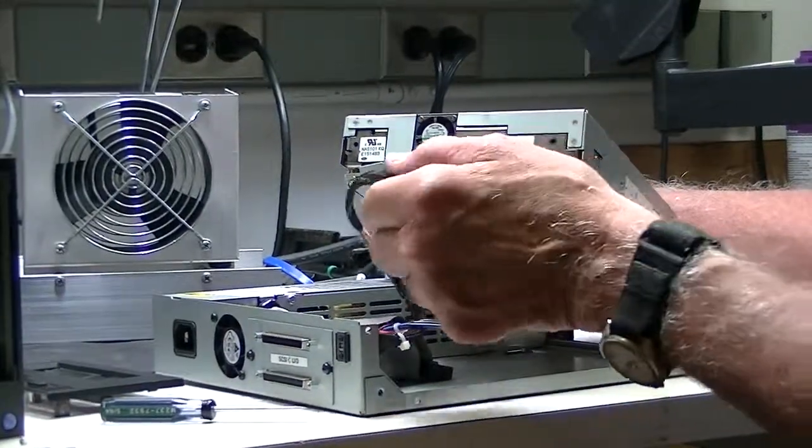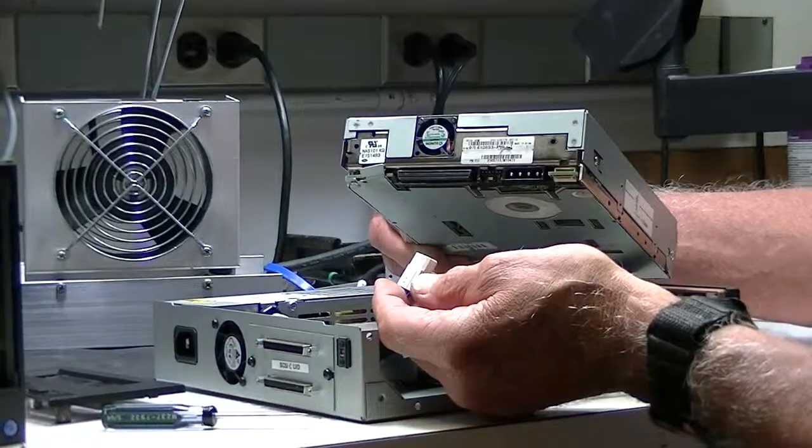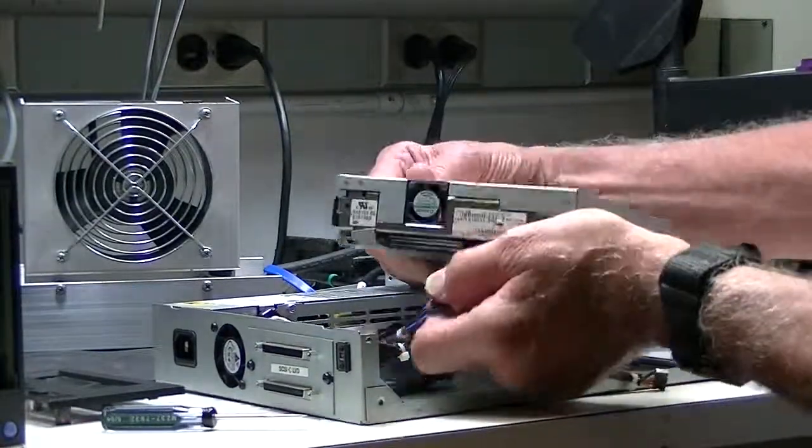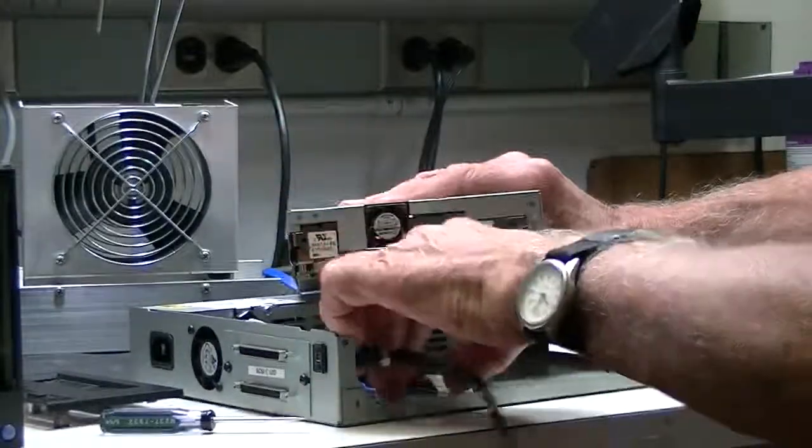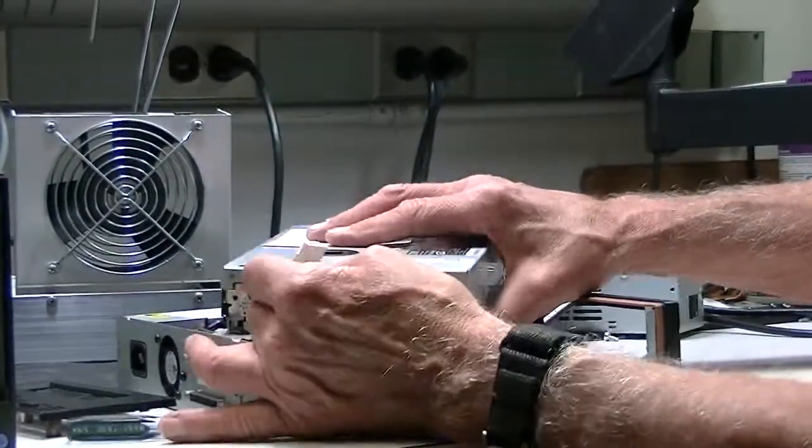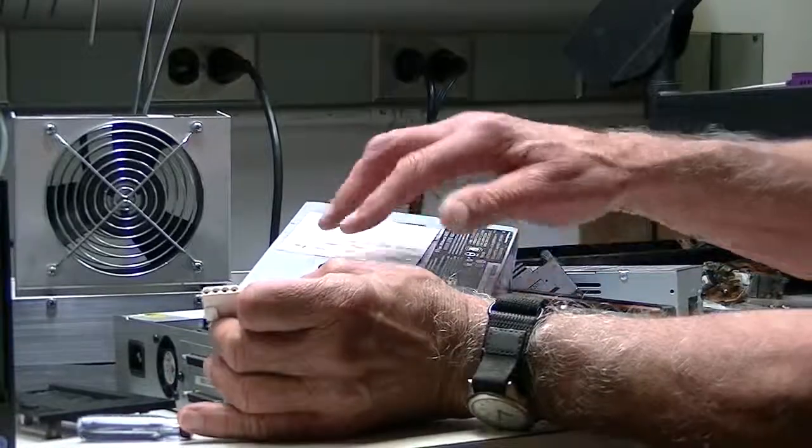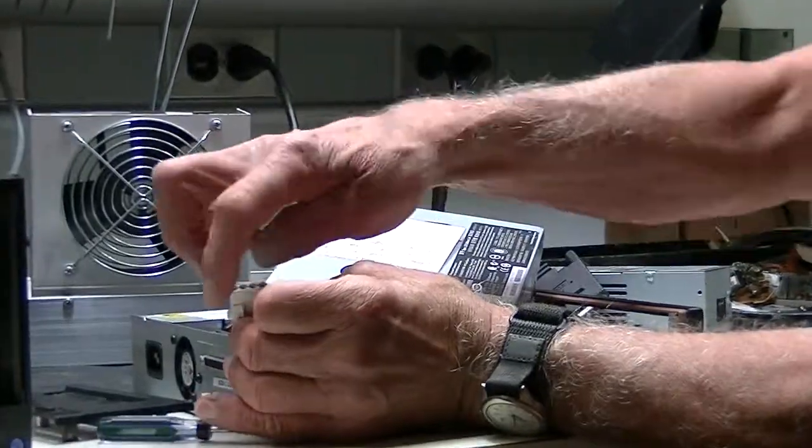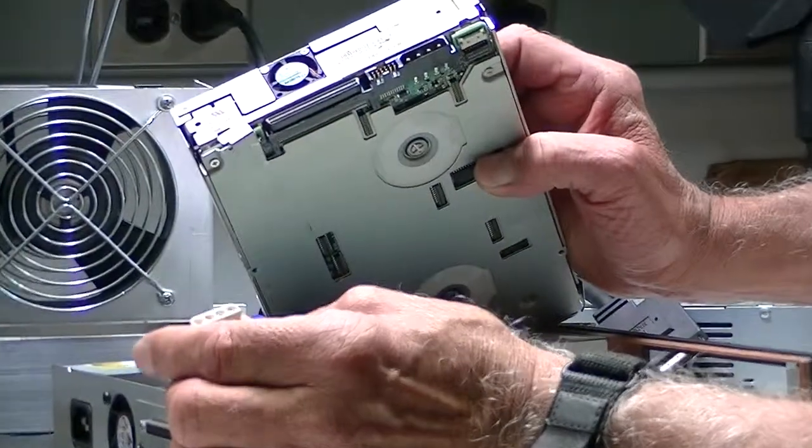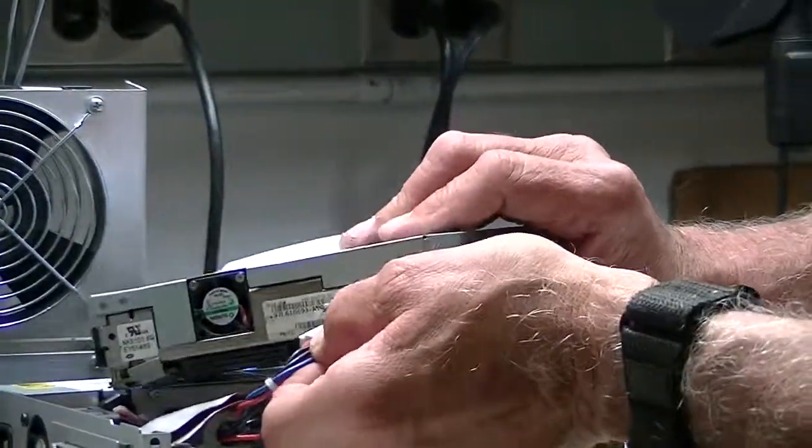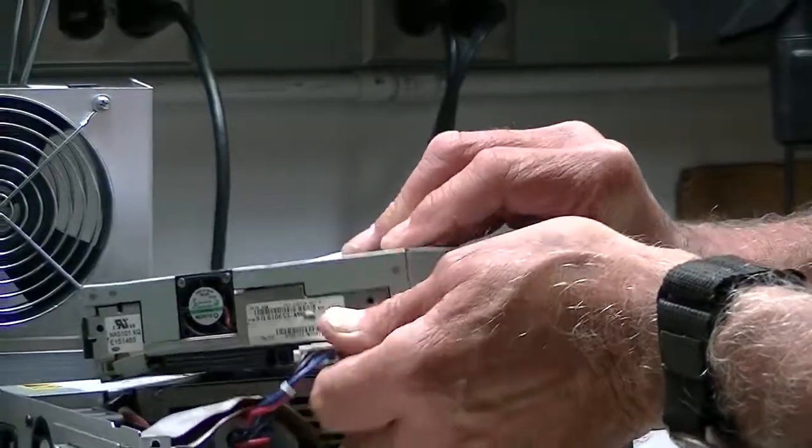One of the most important things to do is this power connector. The power connector itself fits in, only can fit in one way. And it's keyed a little bit. You've got some round ends on top and square on the bottom. So you look and you say, okay, the round ends are on the top, square ends on the bottom, sticking the power connector in here.